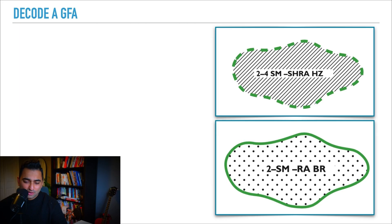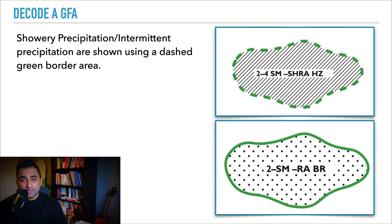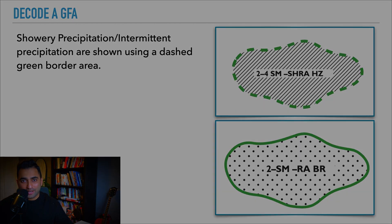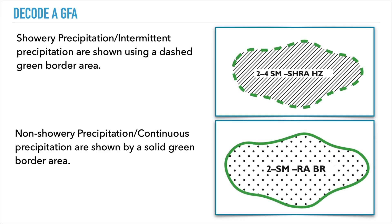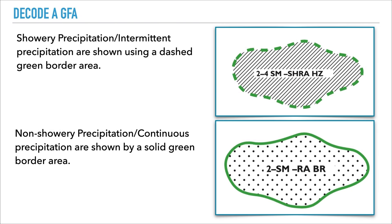The next section is how precipitation shows up on a GFA. In the top section we have dashed green lines for the border, and in the bottom example we have a solid green line. The dashed green line is known as showery or intermittent precipitation — because it's choppy, we have a choppy line. When it's continuous precipitation we have a continuous green line. Showery precipitation is associated with unstable air, and continuous precipitation is associated with stable air.